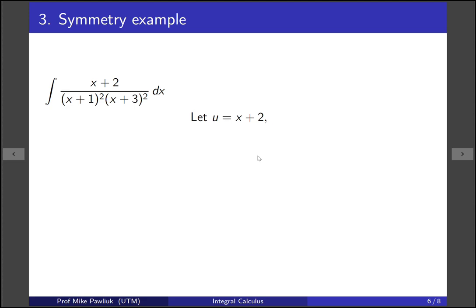So let's let u be x plus 2. Again the derivative is just going to be dx. And we're going to have to substitute x plus 1 and x plus 3. So let's figure out what x plus 1 and x plus 3 are in terms of u. Well it's u minus 1 and u plus 1. Okay let's make the substitution.